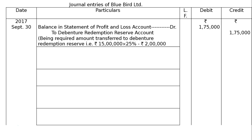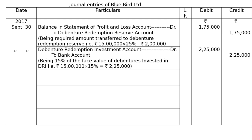The rest amount was transferred. Next is the investment entry: debenture redemption investment account debited to bank, being 15% of the face value of debentures invested in DRI — for example, Rs 15 lakh at the rate of 15% equals Rs 2 lakh 25,000.